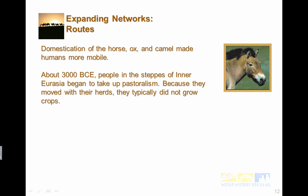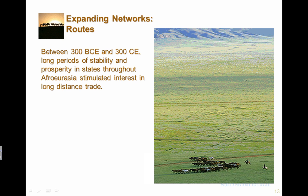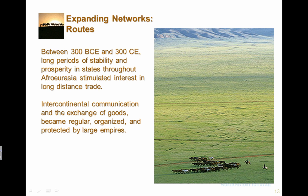About 3000 BCE, people in the steppes of inner Eurasia began to take up pastoralism — they moved around with their herds and typically didn't grow crops. Instead, they traded with farmers and city dwellers for food and other goods. By about 1000 BCE, pastoralists controlled networks of exchange throughout inner Eurasia. Between 300 BCE and 300 CE, long periods of stability and prosperity in states throughout Afro-Eurasia stimulated interest in long-distance trade, and communication between continents became regular, organized, and protected by large empires.